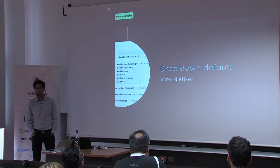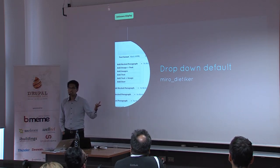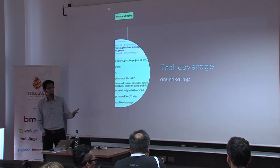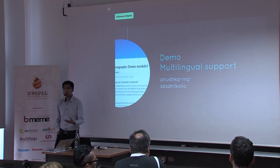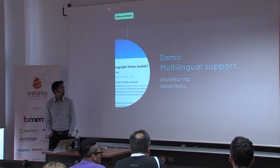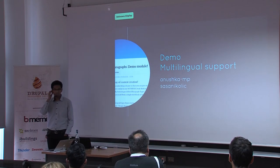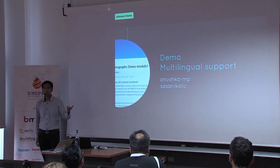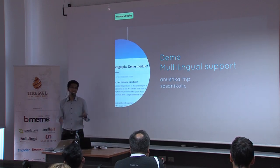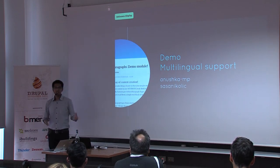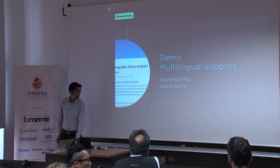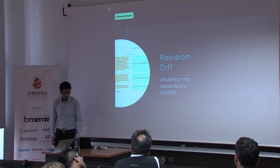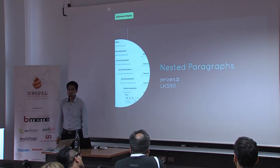First, we set the default button to be a drop-down to match Drupal 8 conventions. Then we added test coverage, because quality assurance is really important — without test coverage it's harder to implement features. The demo module was initially not considered important, but in the end it helped a lot for developers to test. We also added multilingual support, because initially MD Systems added that. We added revision support, diff plugins — and they are now working really well in the Drupal 8 version. And nested Paragraphs was included also by MD Systems.